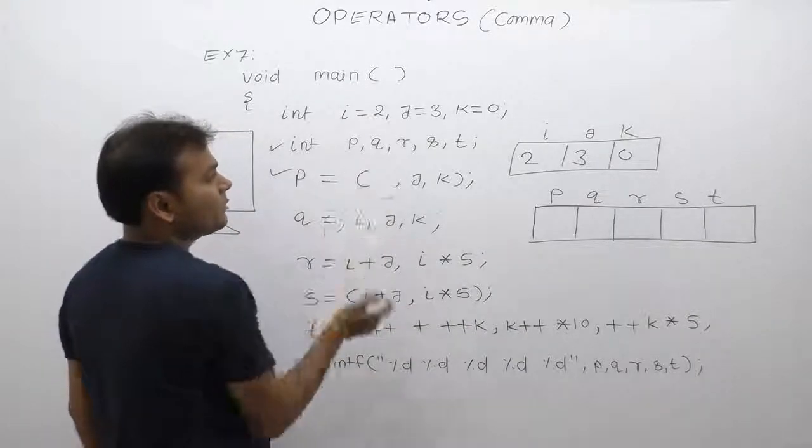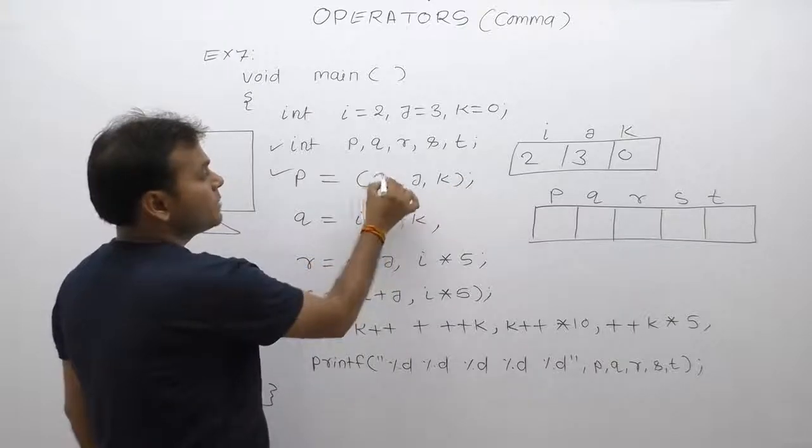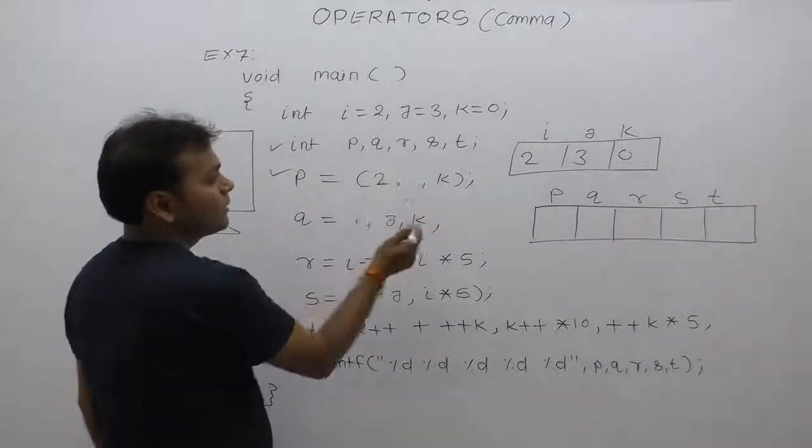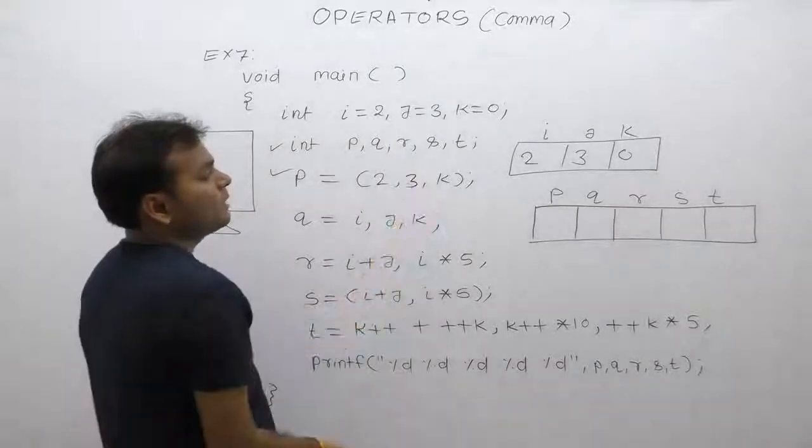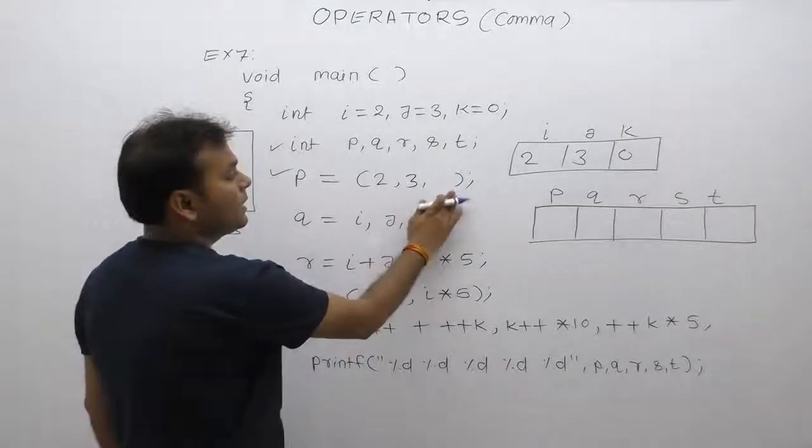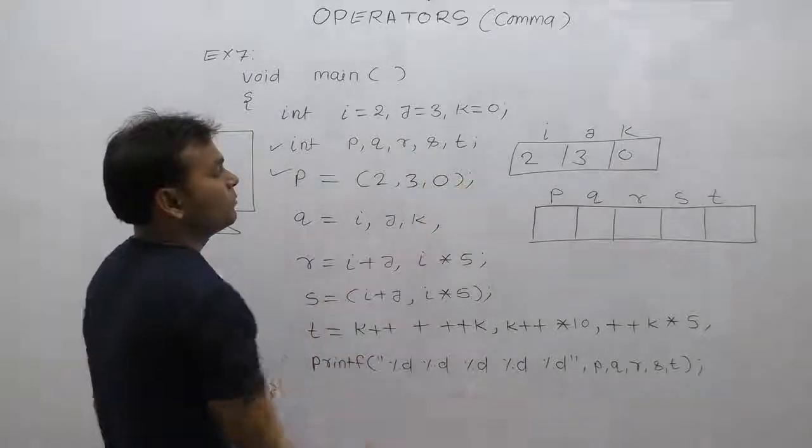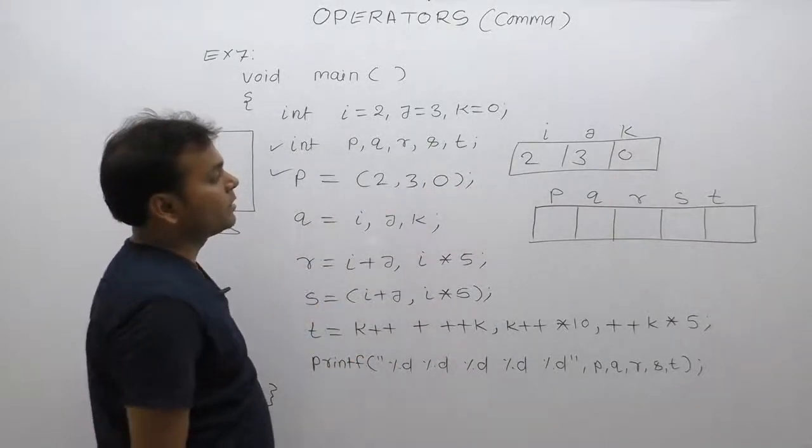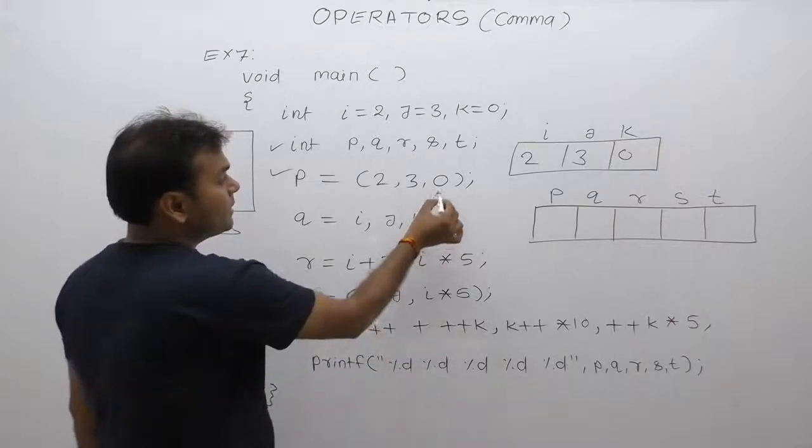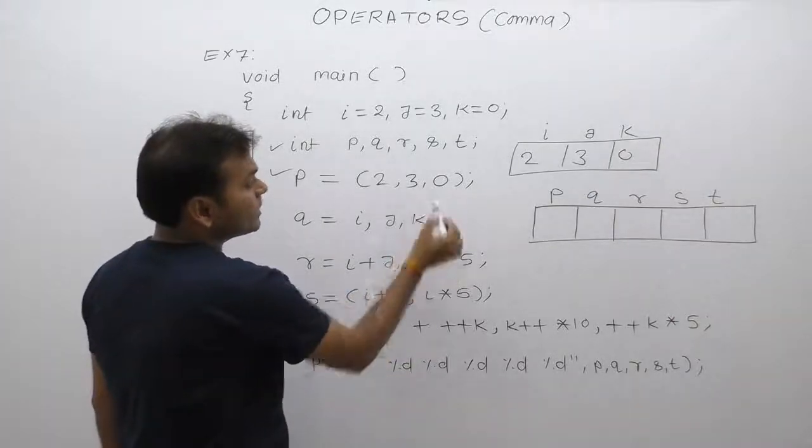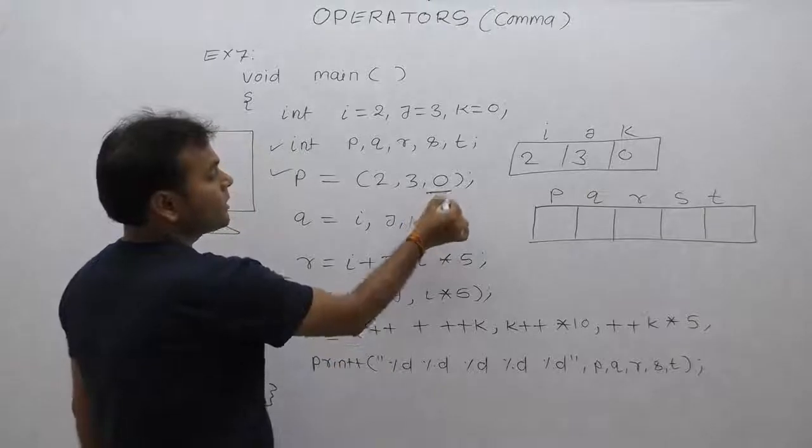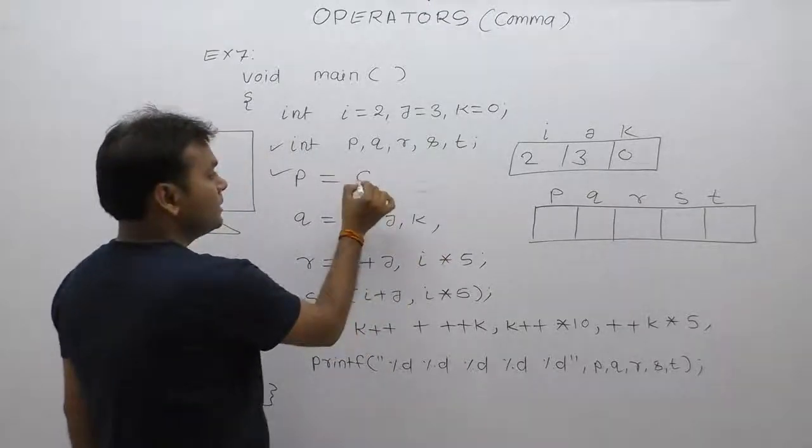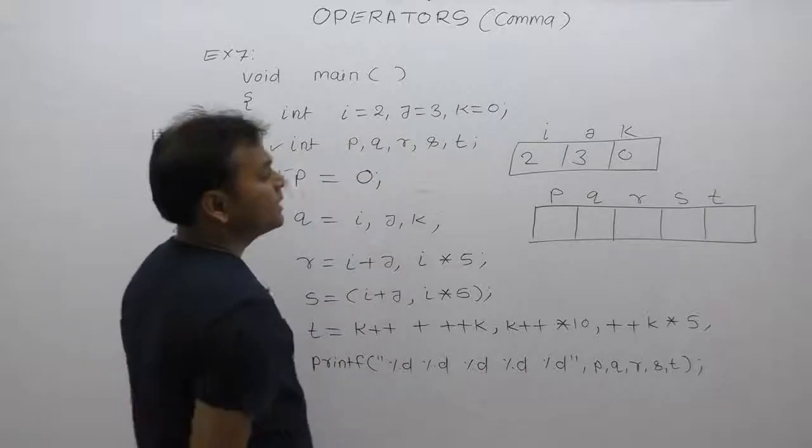Subsequently i, k place for replaces value of i which is 2. Then j, k place for replaces value of j which is 3. Then k place for replaces value of k which is 0. In case of comma in brackets, we have written value of last argument which is 0. Now 0 is assigned to the variable p.